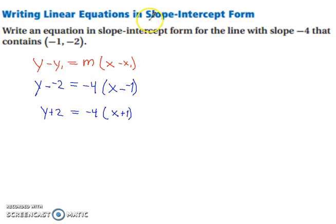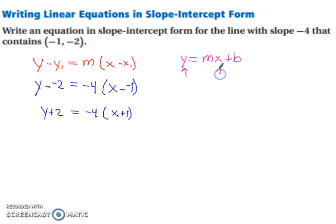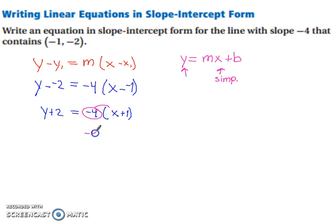The problem asks for slope intercept form, which is y = mx + b. So we need to get y by itself and simplify the right-hand side. Let's start by distributing the negative 4, remembering to keep the sign with the number. So we have negative 4x, and negative 4 times positive 1 is minus 4.